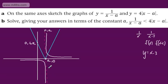There's nothing majorly difficult — all you've got is a reciprocal and a linear function: one with a scale factor stretch of 4 and a horizontal translation, and the other with a basic horizontal translation. In Part B it says: solve, giving your answers in terms of the constant a, where 1/(x - a) is strictly less than 4|x - a|.